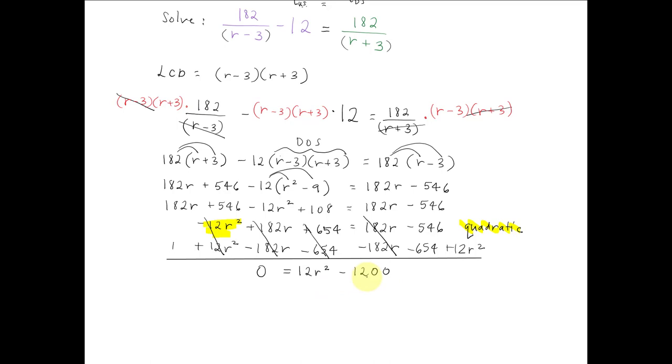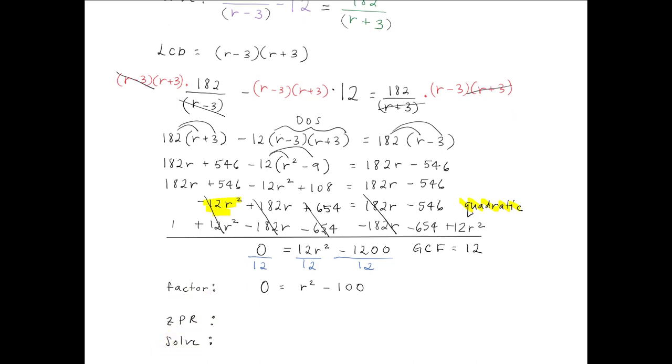So let's simplify this equation. We can see that there's a GCF of 12. So let's reduce each term in each part of the equation by 12. We do this, we get 0 equal to r squared minus 100. And now we're all set to factor, apply the zero product rule, and then solve.